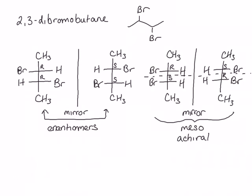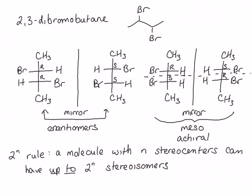This example also nicely illustrates what is called the 2N rule. A molecule with N stereocenters can have up to 2 to the N stereoisomers. It's important to realize they can have up to 2N stereoisomers, because if there is some internal symmetry to the molecule, it will have less than 2 to the N stereoisomers. As we see in this case, this molecule has two stereocenters, so it can have up to four stereoisomers, but because of the symmetry in the molecule, it only has three.